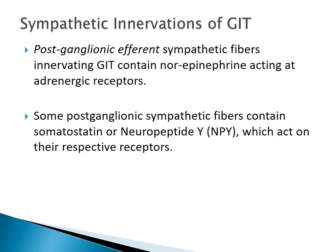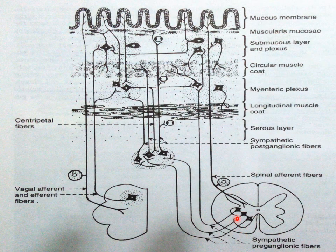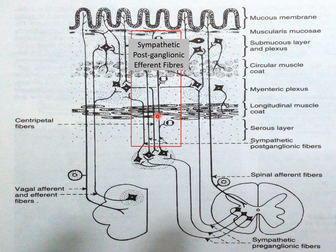The postganglionic efferent sympathetic fibers innervating the gastrointestinal tract contain norepinephrine acting at adrenergic receptors. Some postganglionic sympathetic nerve fibers also contain somatostatin or neuropeptide Y, which act on their specific receptors. These postganglionic efferent fibers of the sympathetic nervous system are effector fibers taking information from the spinal cord to the prevertebral ganglia and to the myenteric and Meissner's plexus in the intestinal tract.